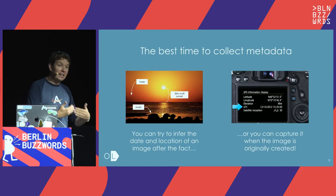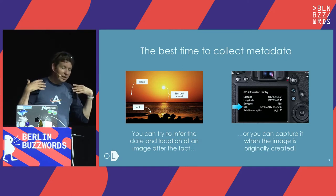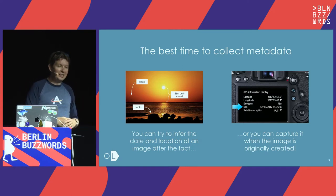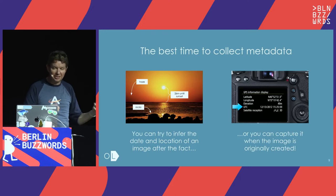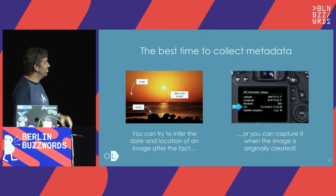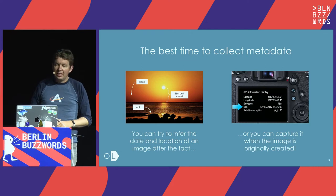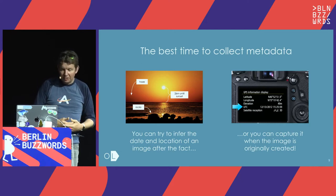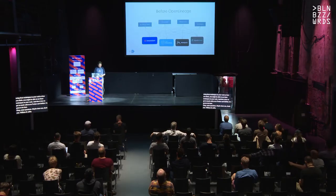One of the design decisions about lineage is to collect this information at the time things are running. We use the comparison of information your camera collects about a picture — you could try to infer where and when the picture was taken by looking at it after the fact, or you could have your camera actually collect this information when the picture is taken, like modern cameras do. That's basically what we're doing with OpenLineage — capturing all the metadata available as things are running.